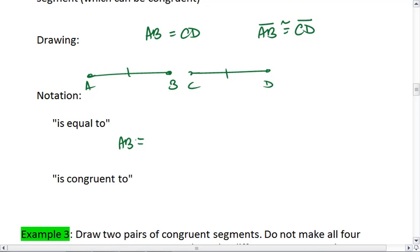So when we're talking about equal to, we use our equal sign, and we're talking about length here. And when we say we're congruent to, we use our congruency sign, and we're talking about the shape.